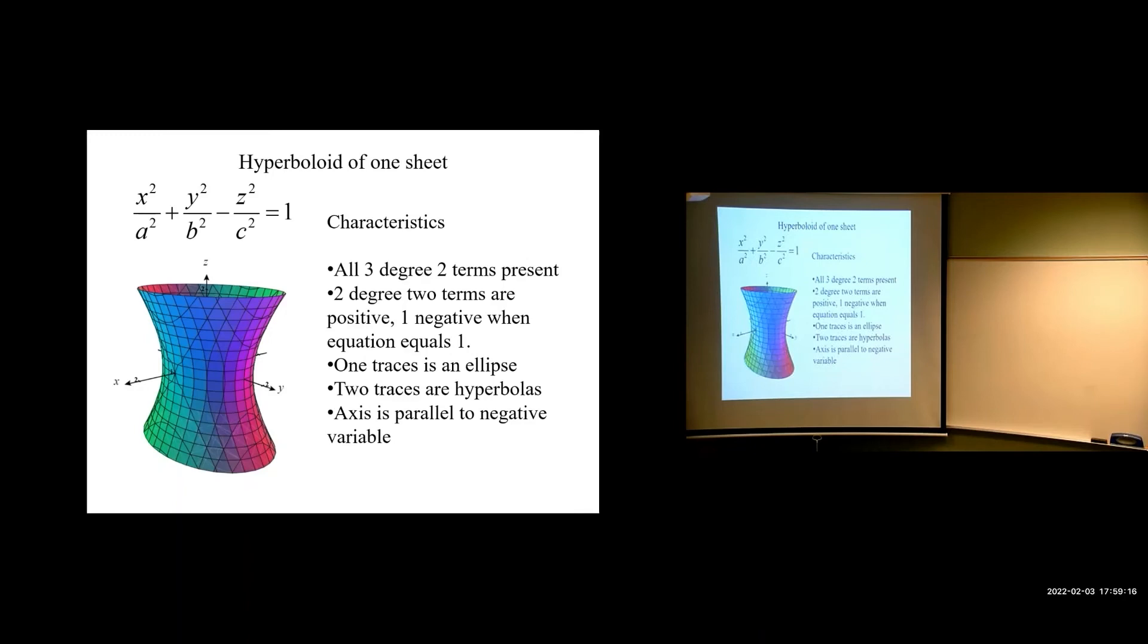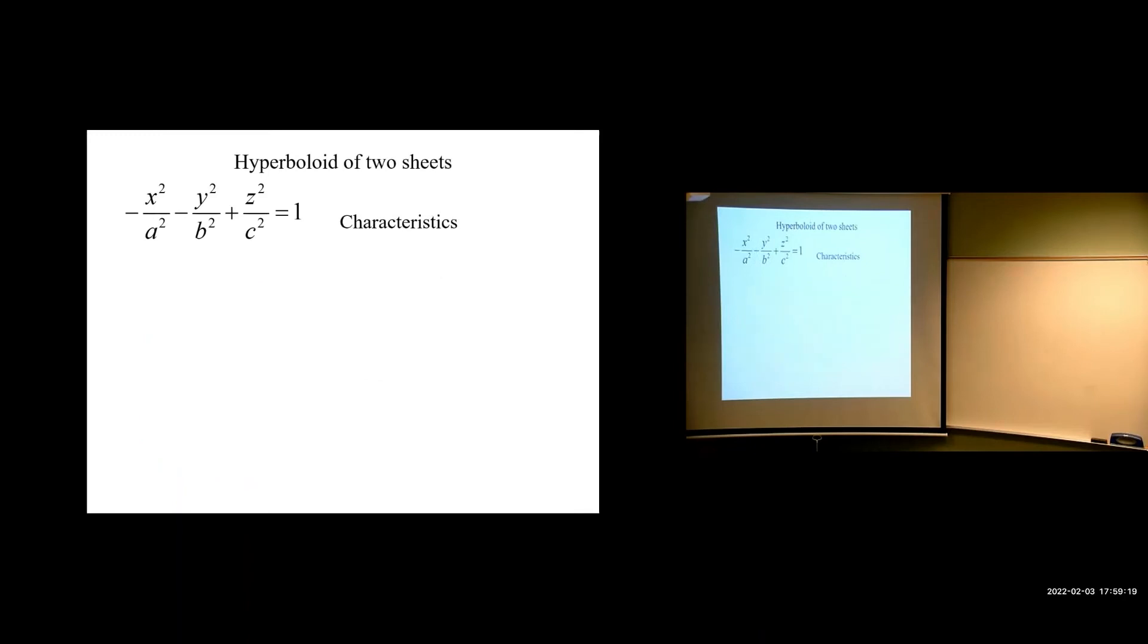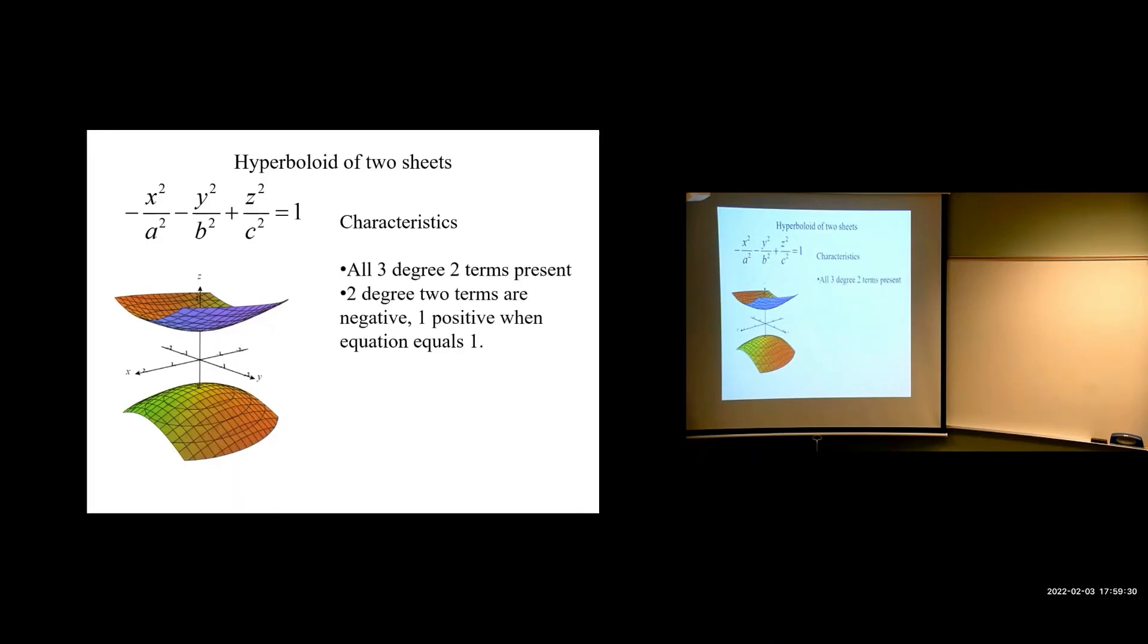All right. Two sheets. Hyperboloid of two sheets. Notice, now, there are two terms that are negative. What does that do? It breaks the parabola into two pieces. All right. And, now, we have one trace as an ellipse parallel to the third plane instead of in it. And, then, we still have two traces that are paraboloids. But, it's that break in the, that's the one sheet versus two sheets. That's what's happening. Because of that extra negative, now, we have a break between the two sheets.